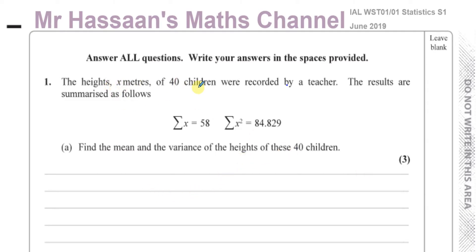The heights were recorded by a teacher and the summarized results are as follows: the sum of the heights of the children is 58, and the sum of the squares of the heights of the children is 84.829.